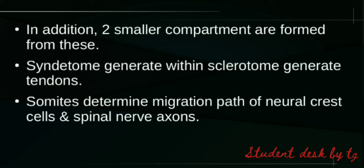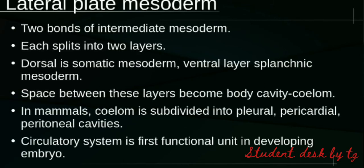To summarize, the paraxial mesoderm is organized into blocks of cells called somites. We have studied the three compartments and what is generated from somites. The key function of somites is to determine the migration of neural crest cells and nerve axons. Now we move on to the lateral plate mesoderm, which lies beneath the two mesoderms.